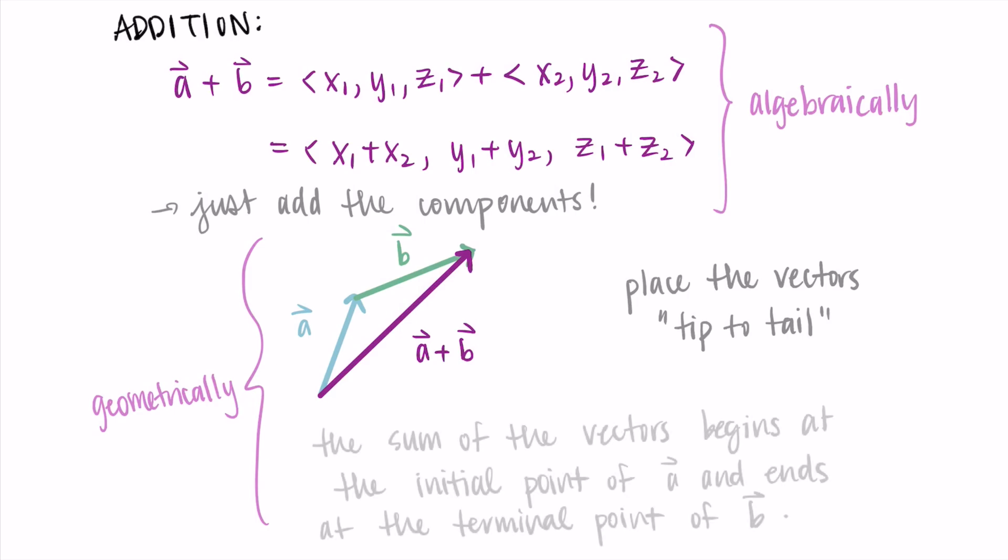And again, to write this out formally, the sum of the vectors begins at the initial point of a and ends at the terminal point of b. Just remember that we go tip to tail with the vectors.